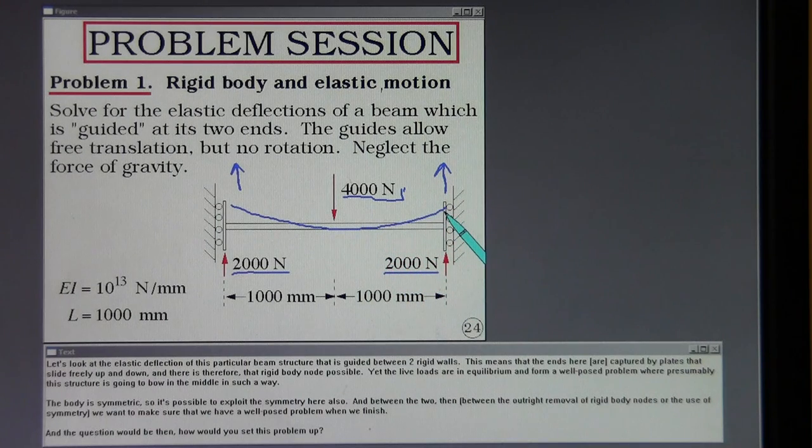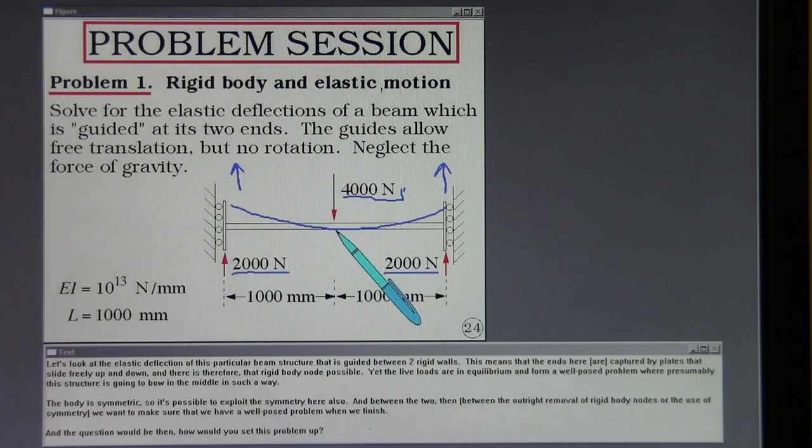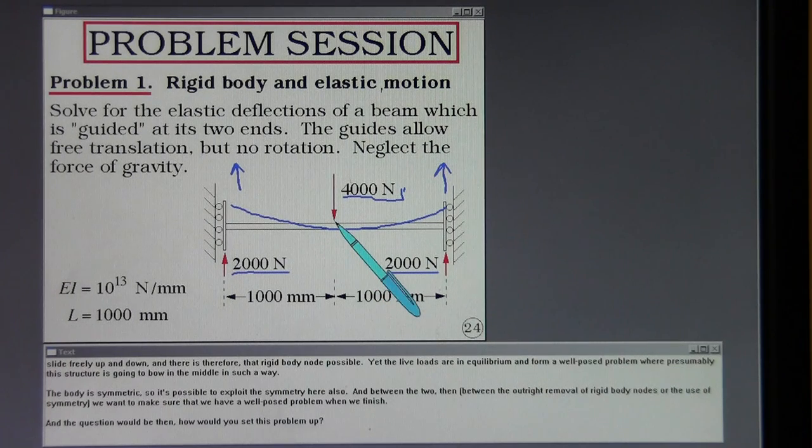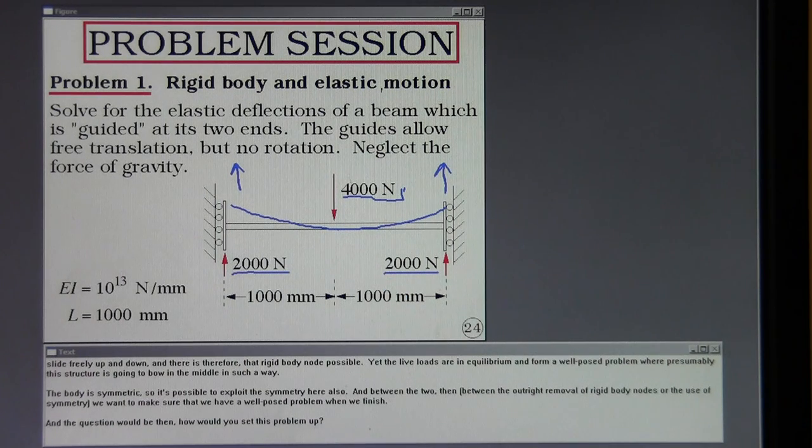The body is symmetric so it's possible to exploit the symmetry here also. And between the two then, between the outright removal of rigid body modes or the use of symmetry, we want to make sure that we have a well-posed problem when we finish. And the question would be then how would you set this problem up?